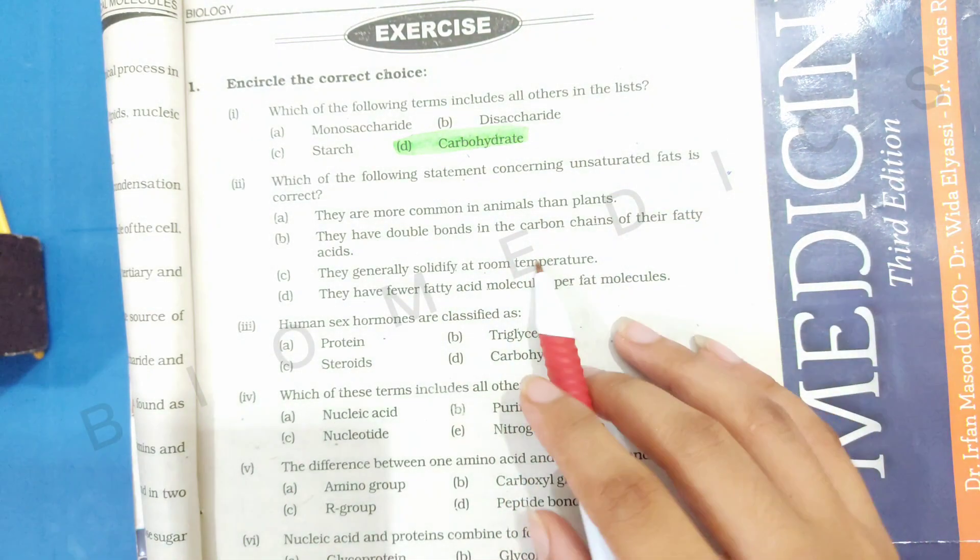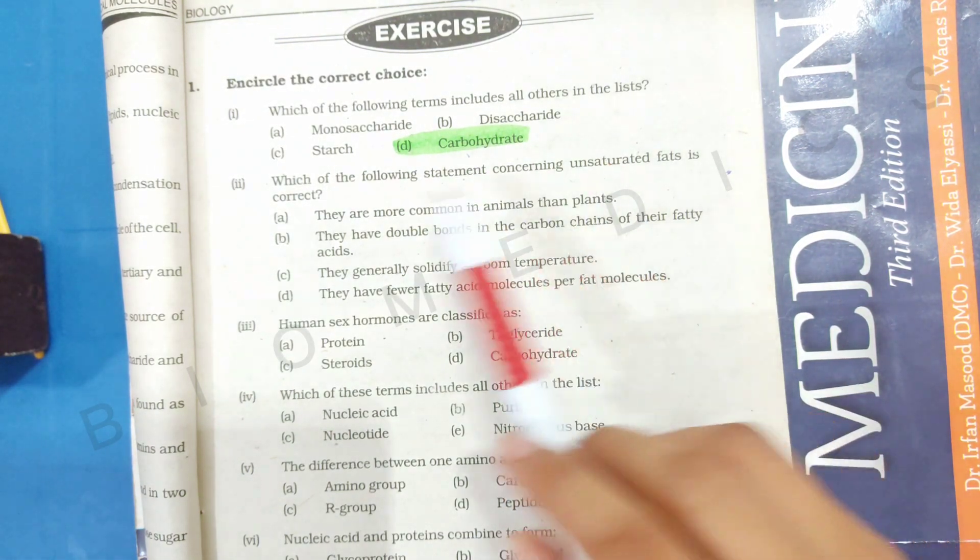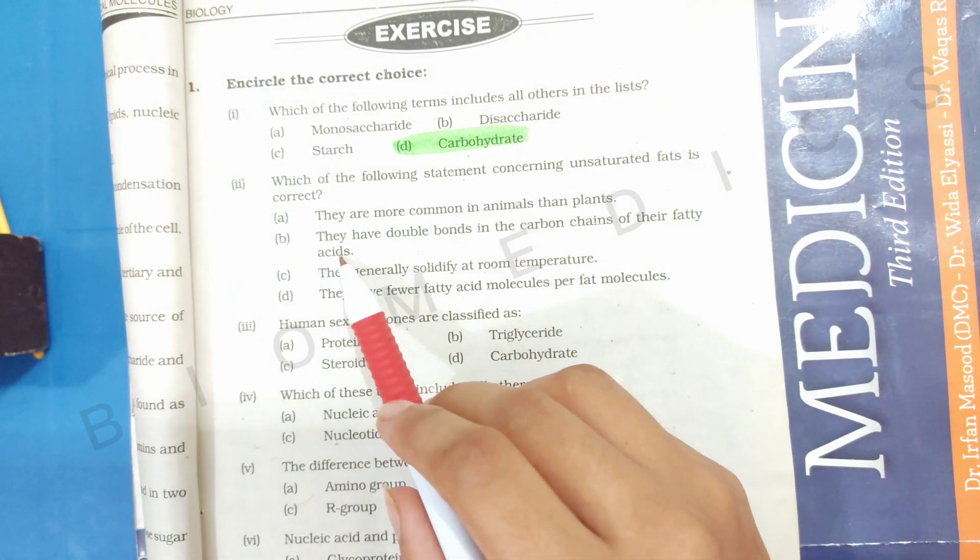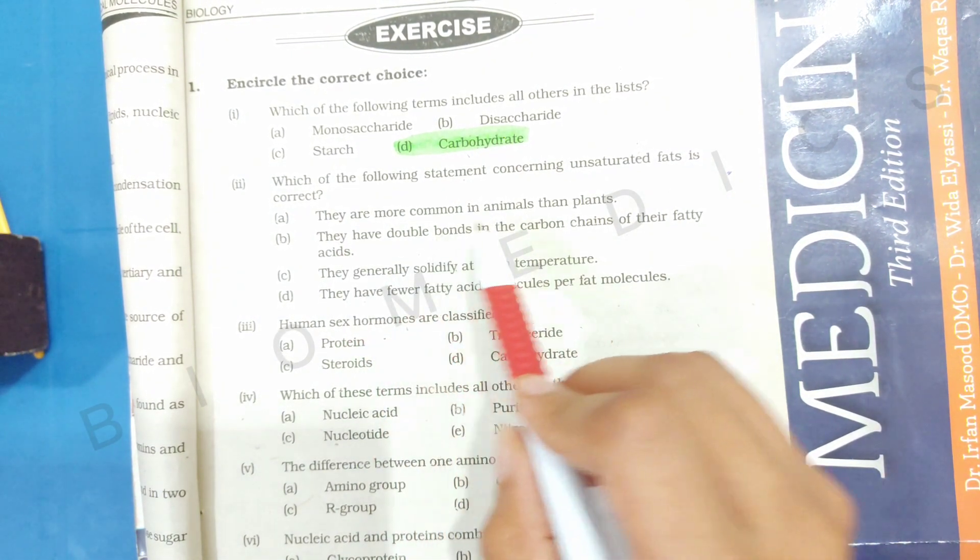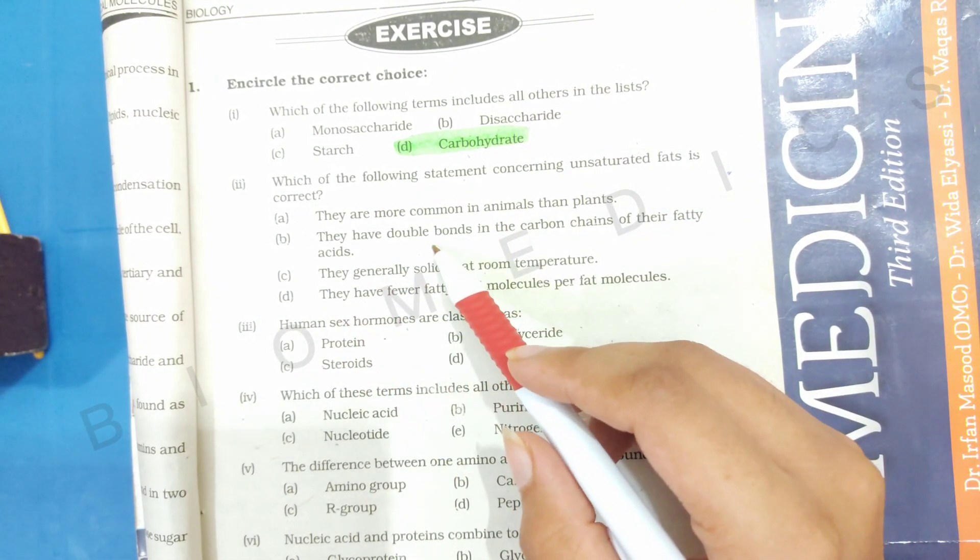Now, unsaturated fatty acids are in plants and saturated fatty acids are in animals. So first of all, we have the option that says they are common in animals. We have double bonds in carbon chains of fatty acids.